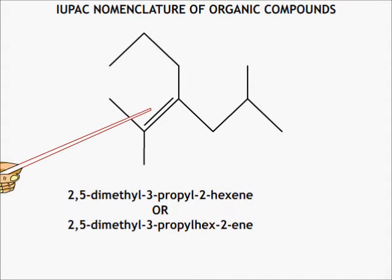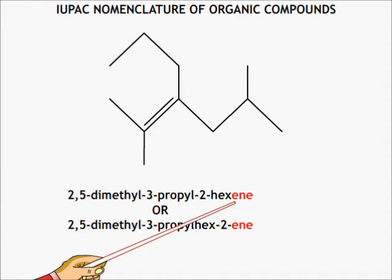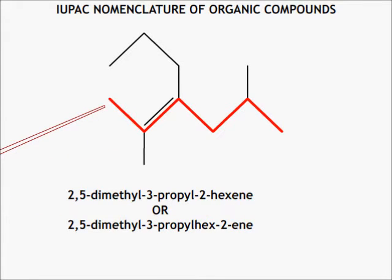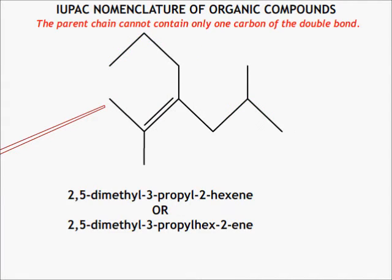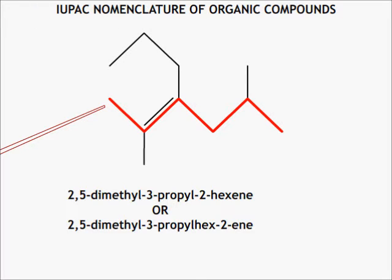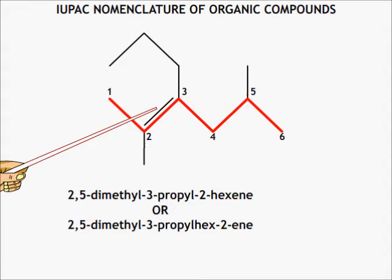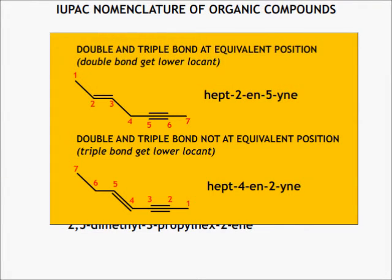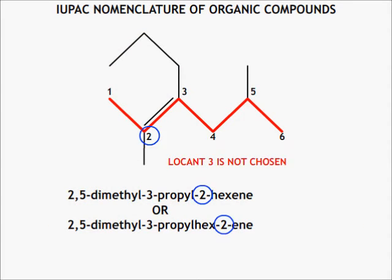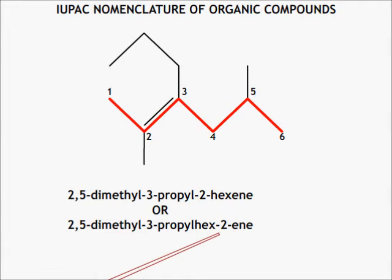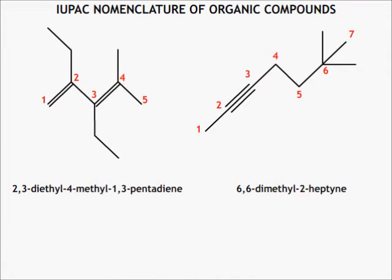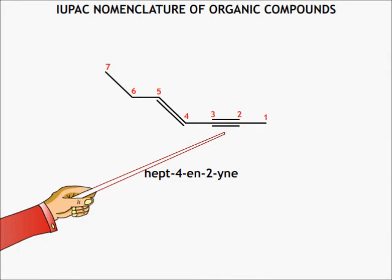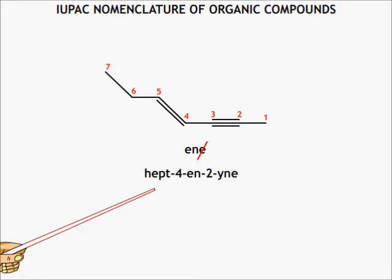In this compound, there is a double bond, so the primary suffix will be -en-. The parent chain is chosen to include both carbon atoms of the double bond, even if it is not the longest chain, since a chain containing only one carbon of the double bond is not allowed. It is numbered so that the double bond gets the lowest possible locant. If a double bond and triple bond are at equivalent positions, the double bond gets the lower locant. The carbon atom of the multiple bond with the lower number is chosen as the locant. For compounds containing both double and triple bonds, note that 'e' is omitted from -ene when combining suffixes.